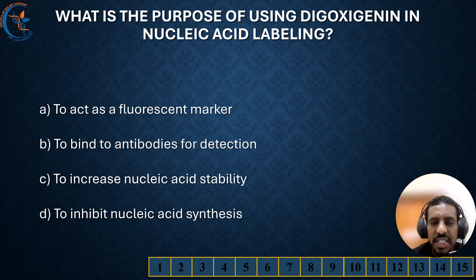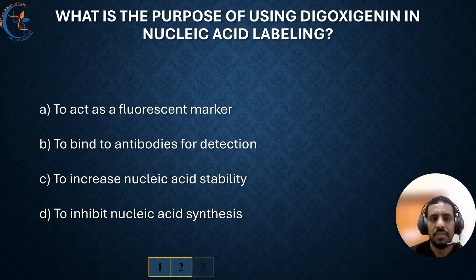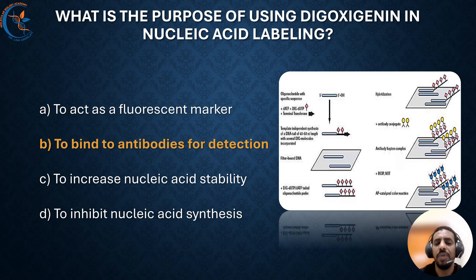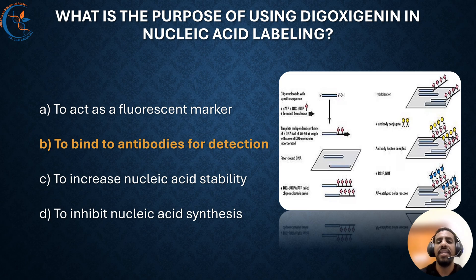What is the purpose of using digoxigenin in nucleic acid labeling? The correct answer is to bind to antibodies for detection. Digoxigenin in nucleic acid can be detected using anti-digoxigenin antibodies, which specifically recognize and bind to the digoxigenin. This binding enables researchers to use various detection methods such as enzyme-linked assays or fluorescent-based techniques to visualize the labeled nucleic acids. This labeling technique is widely used in molecular biology, particularly in applications like in-situ hybridization and blotting techniques. It offers a highly sensitive and non-radioactive way to detect specific DNA or RNA sequences.